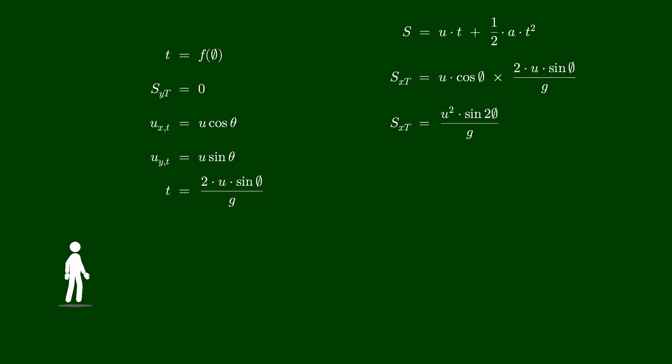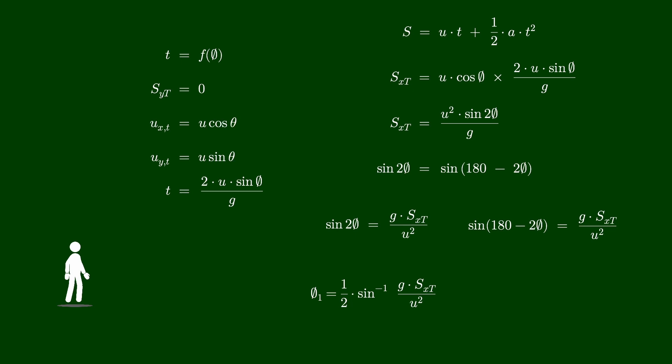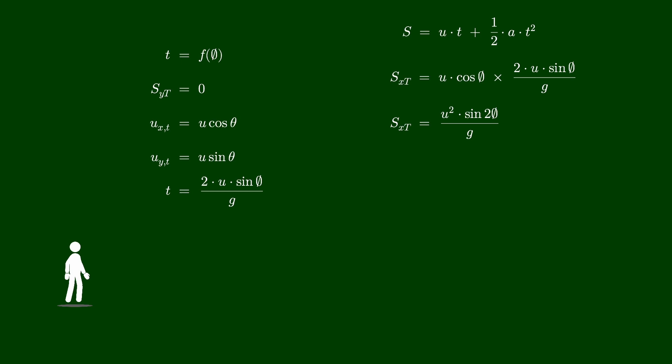This is an expression of the angle theta. Now we shall use trigonometry to find the two angles. The sine of 2 times theta is equal to the sine of its supplementary angle, which is 180 minus 2 times theta. We can write two expressions as shown here. When you solve the first expression, you obtain a value for theta. Let us now solve the second expression to calculate the complementary angle of theta. These are the two angles at which you can throw a ball that result in the same horizontal range. The maximum horizontal range is reached when the value of sine 2 theta is 1. When you solve the expression, you get the value for theta as 45 degrees. That means you get the maximum horizontal range when you throw a ball at an angle of 45 degrees.